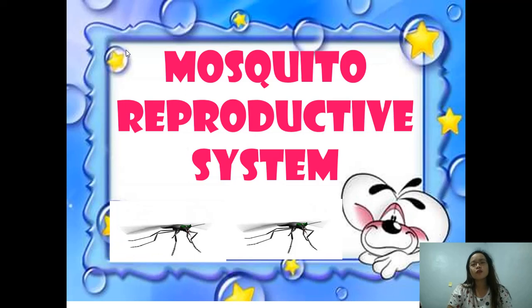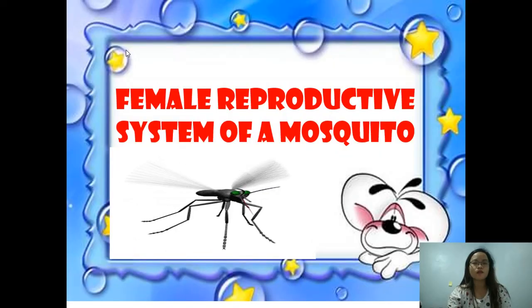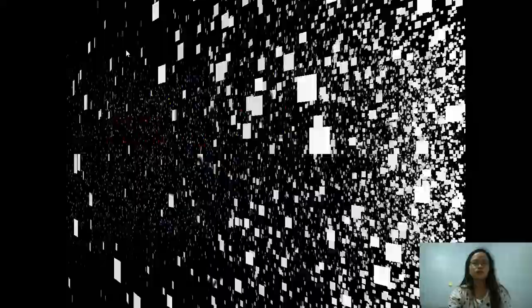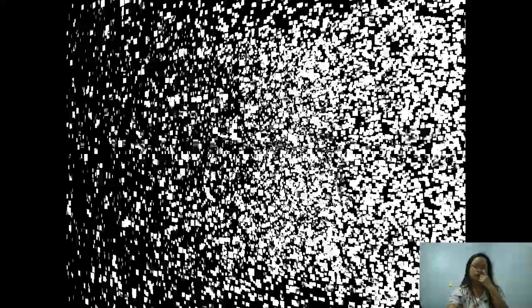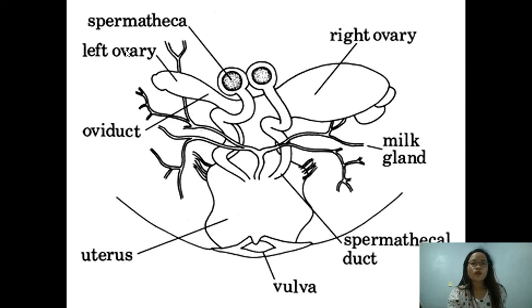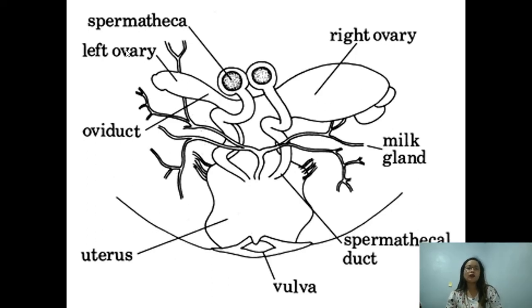Now let's move on to the mosquito reproductive system. The mosquito is a kind of insect. The parts of the female reproductive system of a mosquito include the right ovary, the milk gland, the spermatheca duct, the vulva, the uterus, the oviduct, and the left ovary.